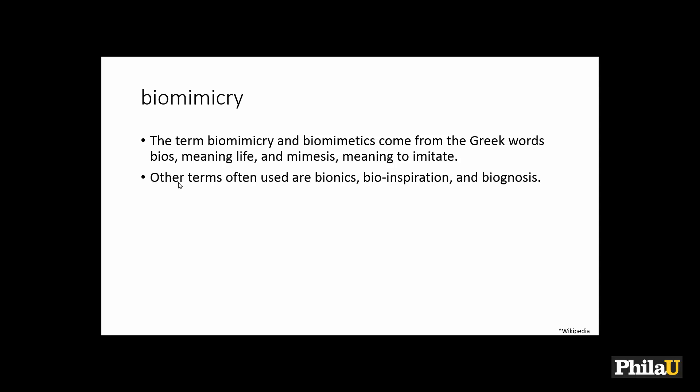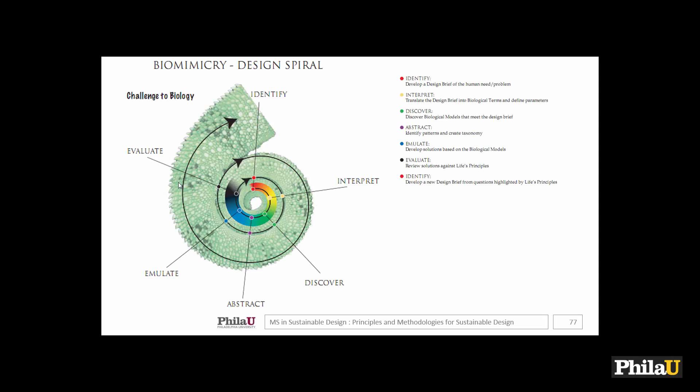We also hear terms like bionics, bio-inspiration, and similar variations. The really important part of the process starts in the middle: you identify a problem by developing a design brief. In studio your professor gives you a design brief telling you what to achieve. In biomimicry, you write your own design brief around the human need or problem — you have to define that problem very carefully and clearly.